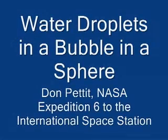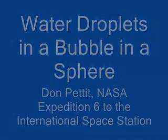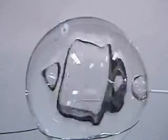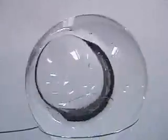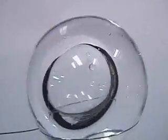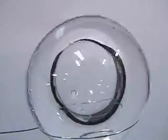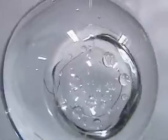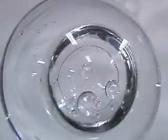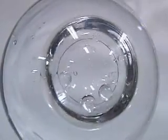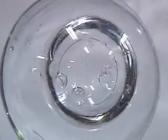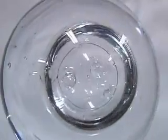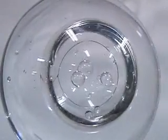Water droplets in a bubble in a sphere. Here we have a sphere of water 75 millimeters in diameter with an air bubble inside about 35 millimeters in diameter, and we inject water droplets anywhere from one to eight millimeters in diameter into the bubble and look at the resulting collision dynamics.